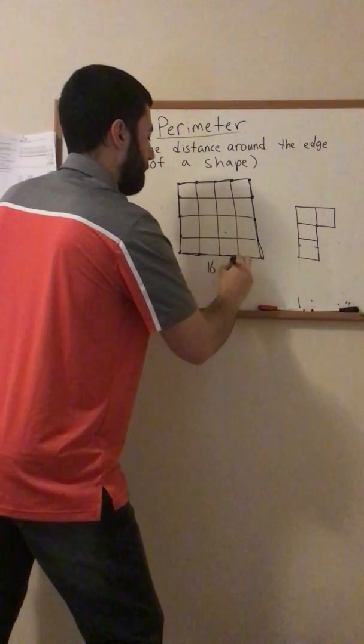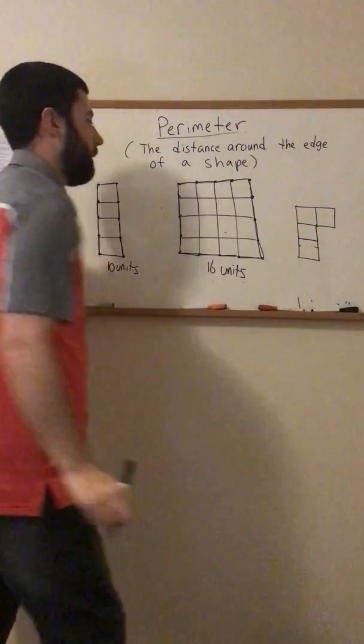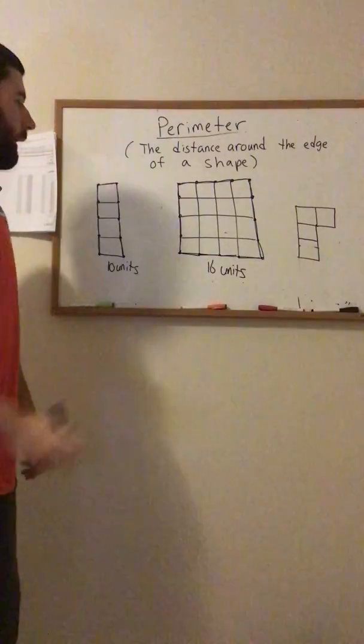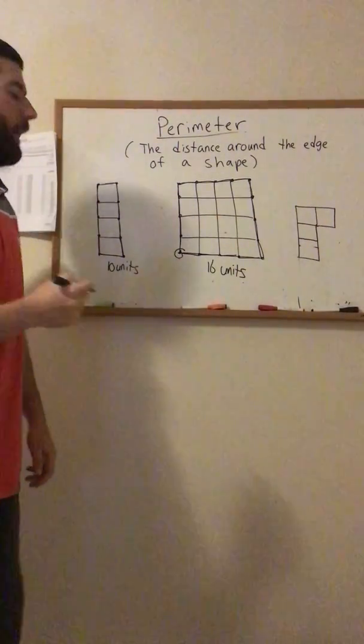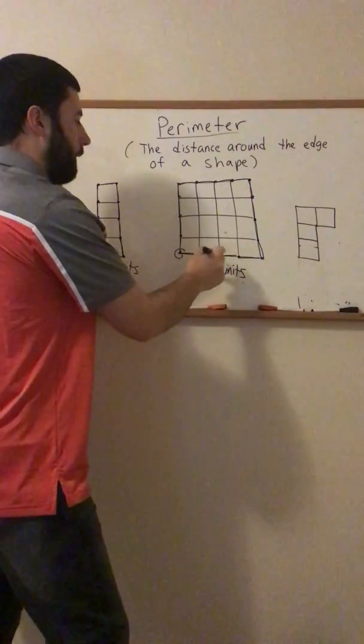Now we have 16, 16 what? 16 units. So I'm counting the perimeter. It's easier when you start at a point and then finish and count because you can actually count each different square.